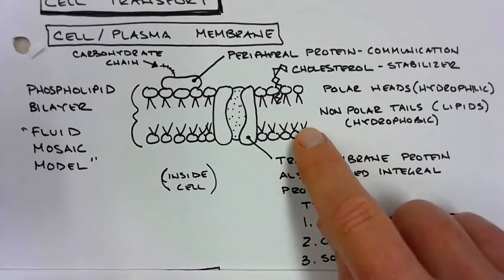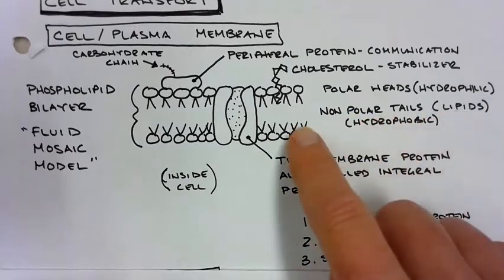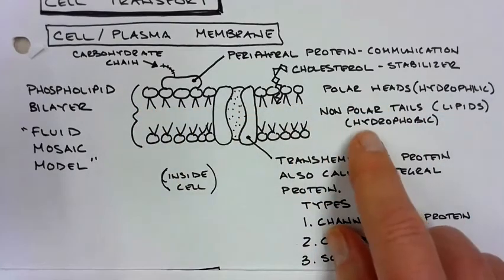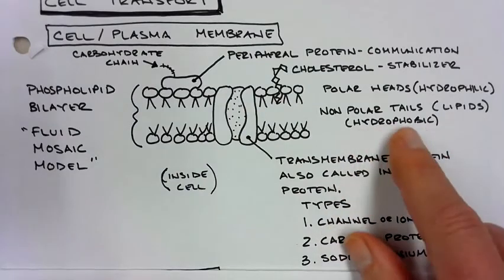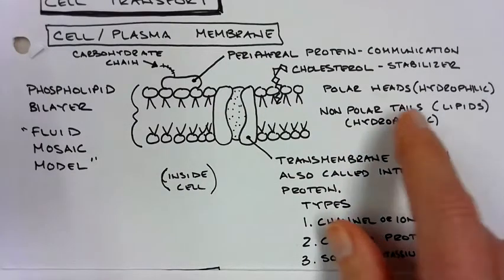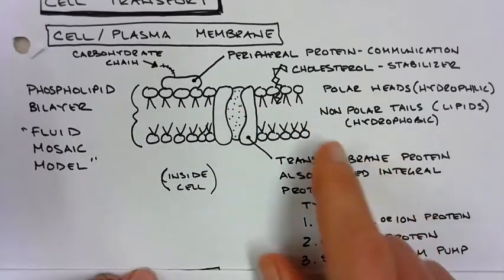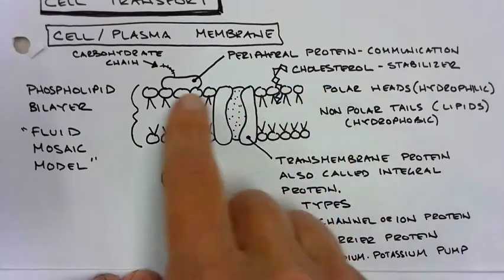And then it has what are called nonpolar tails. These are fats, they're lipids. There's like an oil layer that runs between the middle and those are what we call hydrophobic. Think of things that you have a phobia or you're scared of. So this is why we don't dissolve when we take a bath or a shower. So that's the basic bilayer.